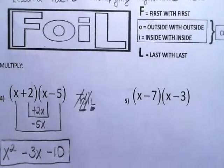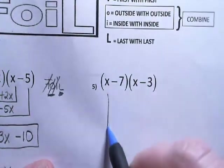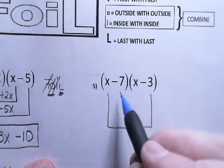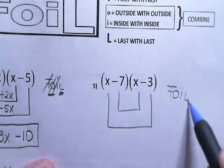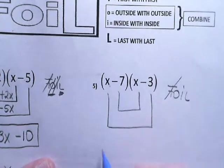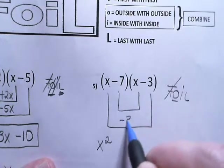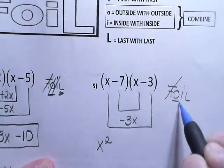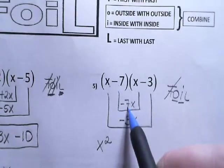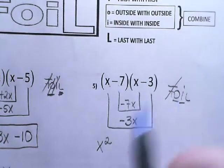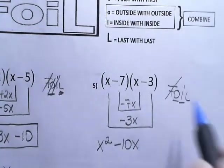All right, let's try it again. I'm going to draw two boxes — one connecting the last two terms and one connecting the two middle terms. I'm going to do FOIL. First times first: x times x is x squared. Then the O, outside times outside, gives you negative 3x. And the inside gives you negative 7x, because negative 7 times x is negative 7x, and you put it in the inner box. Now that you have these two numbers, combine them: negative 7 plus negative 3 is negative 10x. So we're done with these two.